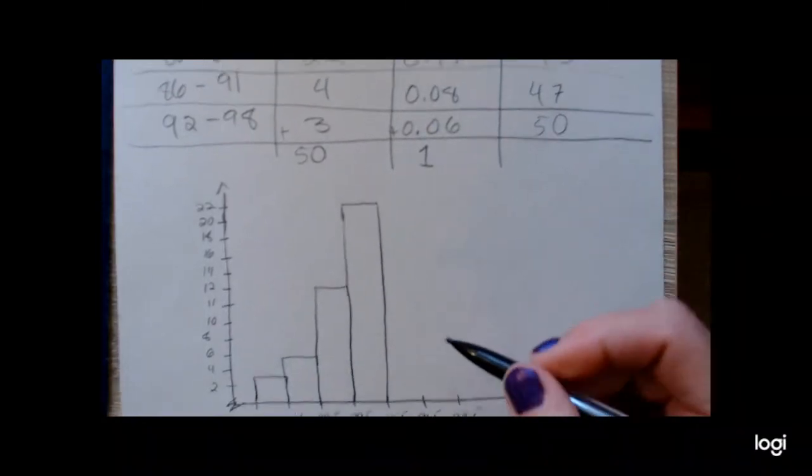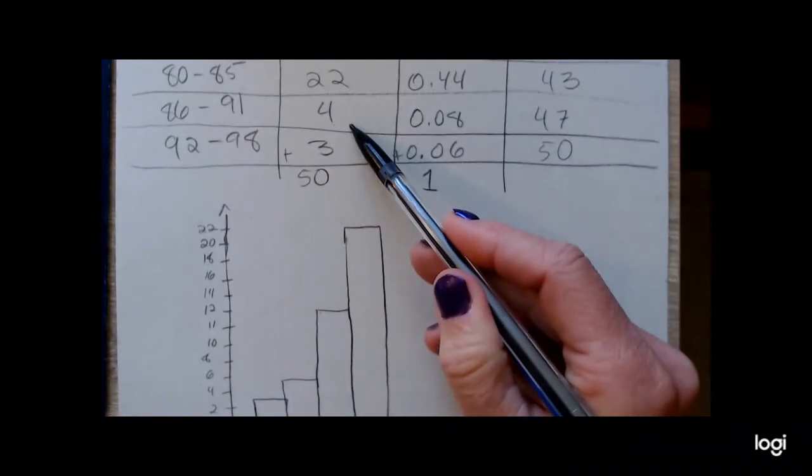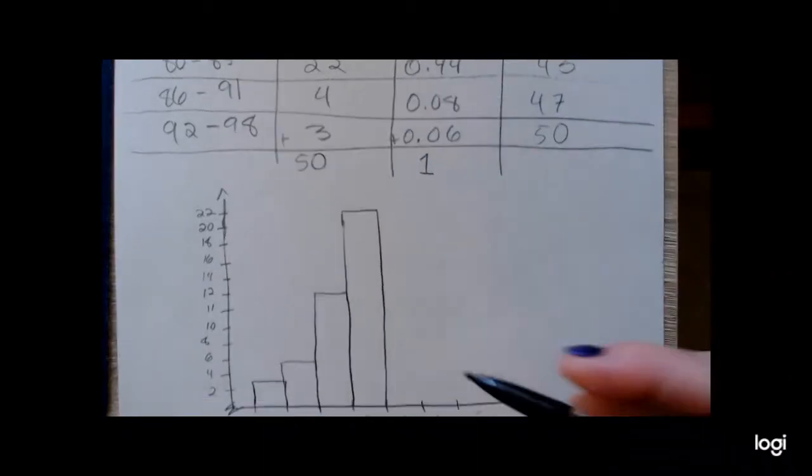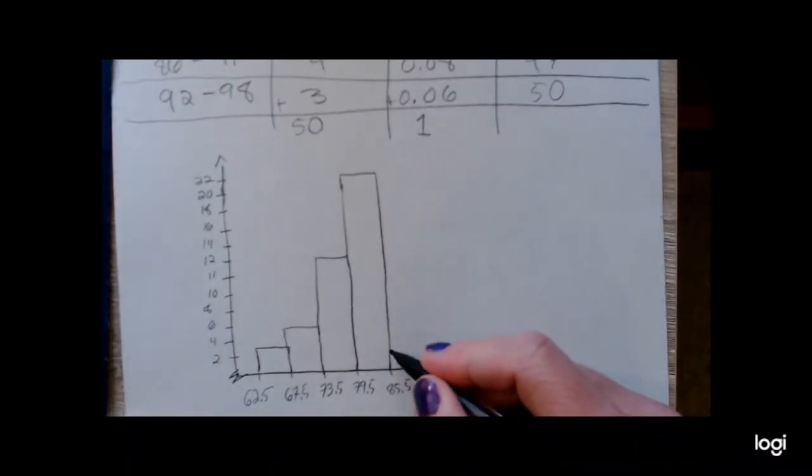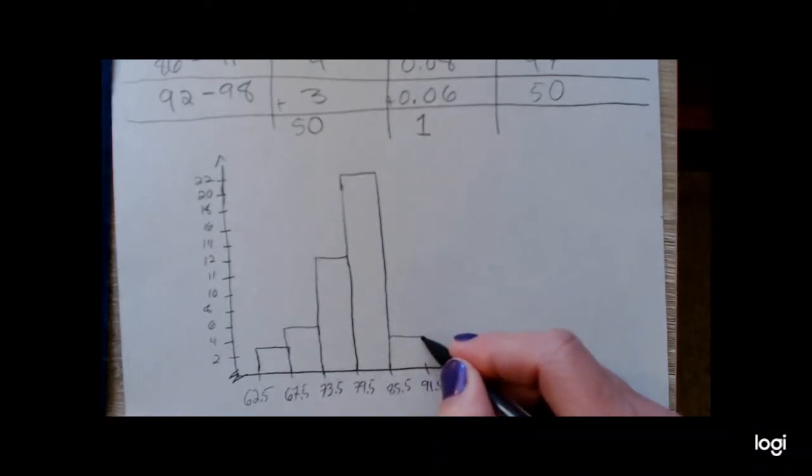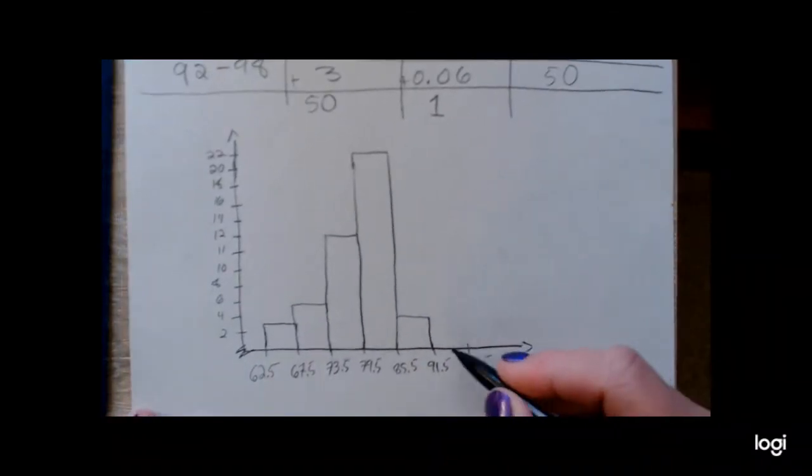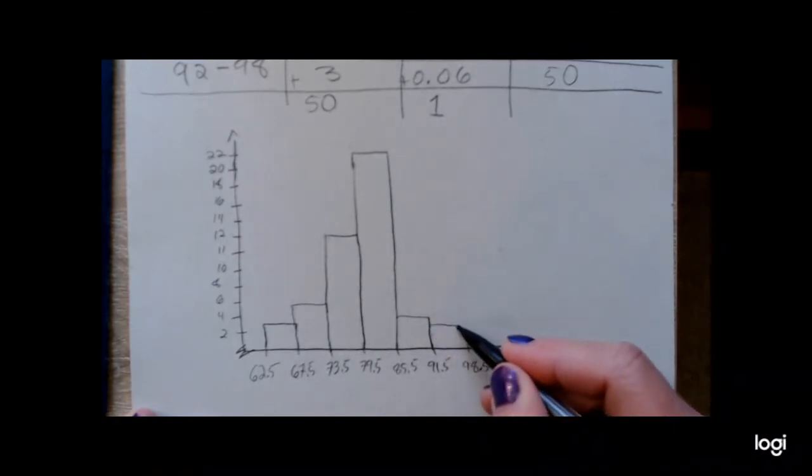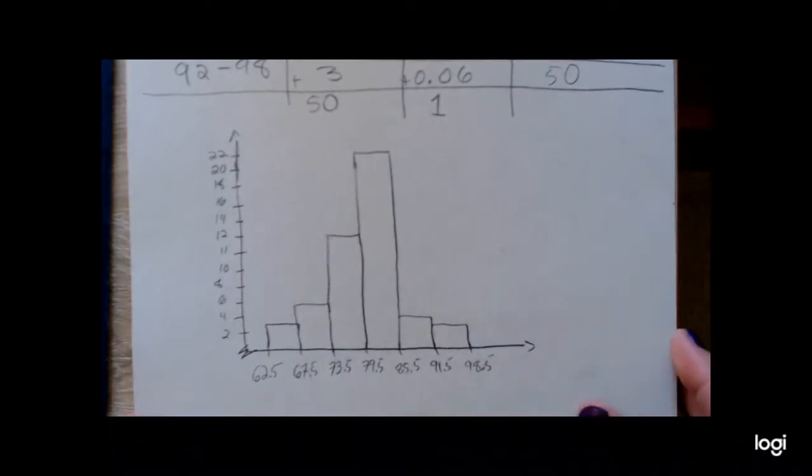And then we drop down. The next one is a height of 4. Okay, very small. And then last but not least, we end with a height of 3, same as the first class.